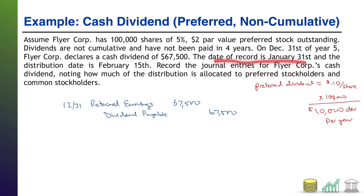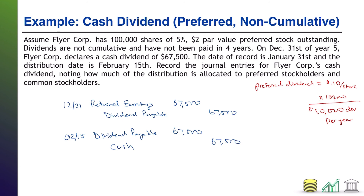The date of record is January 31st — that is not an accounting date. It is simply the date that investors must hold the stock in order to receive this dividend. The distribution date is February 15th, which is the day you actually pay off the obligation. On February 15th, paying off a liability, you debit Dividends Payable $67,500 and credit Cash $67,500.